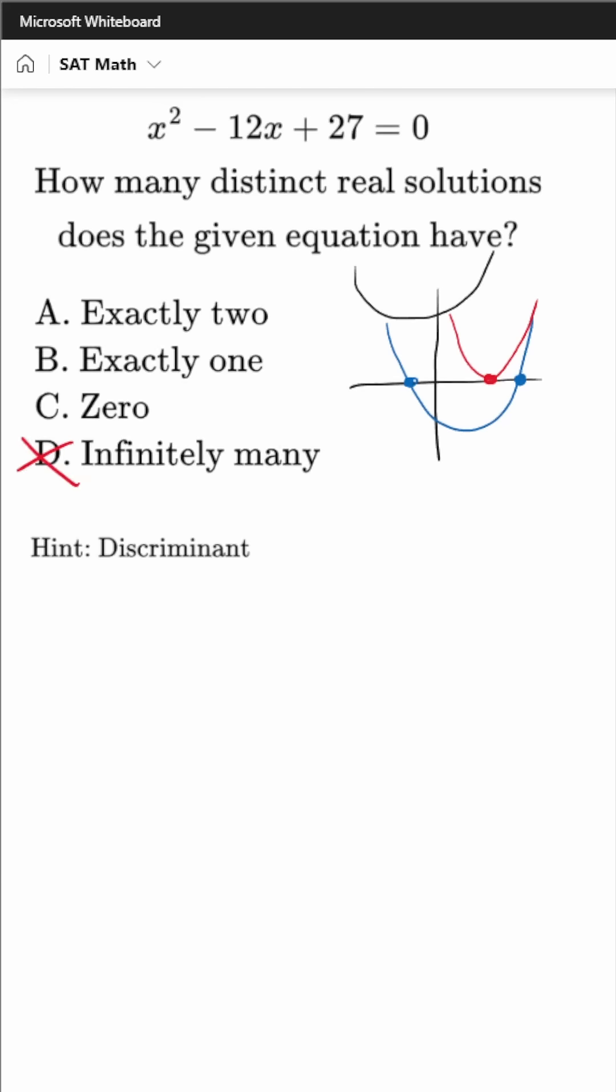But regardless, you can't have infinitely many solutions. So we can cross off D. Now I've given you a hint for if you want to solve this without a graphing calculator, you can use what's called the discriminant.